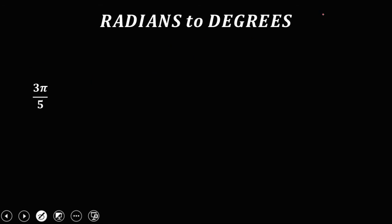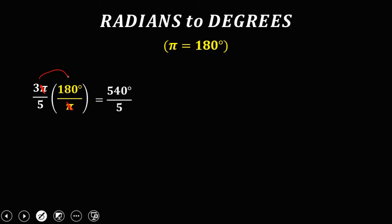For radians to degrees, the same conversion: pi equals 180 degrees. For this given angle, 3 pi over 5, multiply by 180 degrees over pi. Cancel pi. Then multiply 3 times 180 — it's 540 degrees. Divide by 5 — it's 108 degrees.